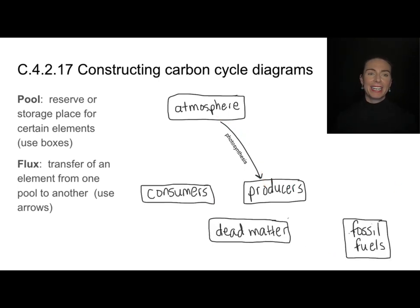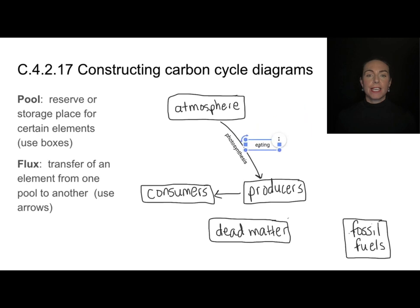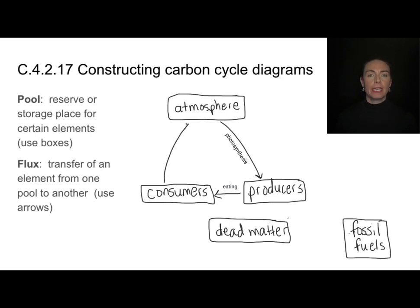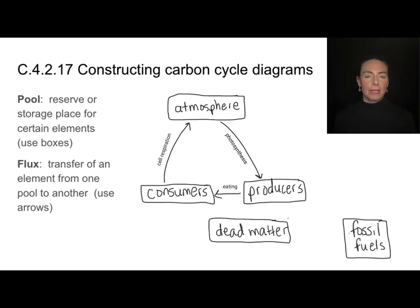I've gone ahead and added some of these other carbon pools or carbon reserves here, and we'll talk about how they're related. Carbon is transferred from producers to consumers through the process of eating — that's my carbon flux. Those consumers are then going to add carbon dioxide back into the atmosphere when they do cell respiration — when they take that food and combust it as fuel, when they oxidize it.